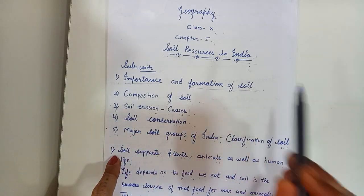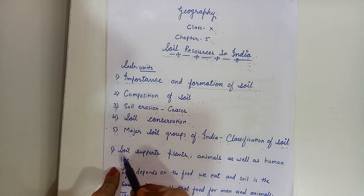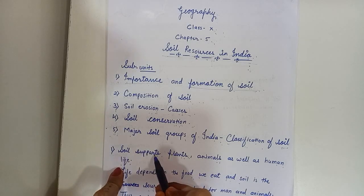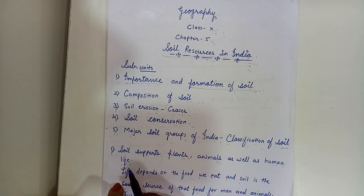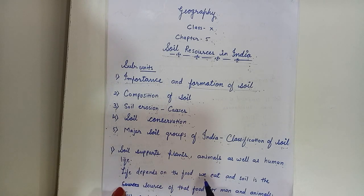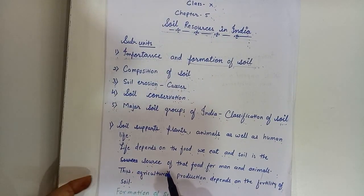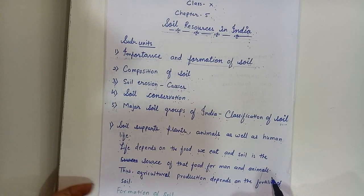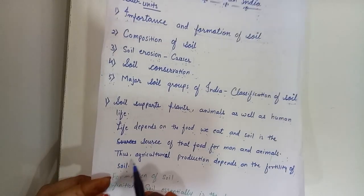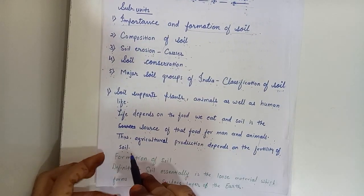The first point is importance and formation of soil. Soil supports plants, animals as well as human life. Life depends on the food we eat and soil is the source of that food for men and animals. Thus agricultural production depends on the fertility of soil.